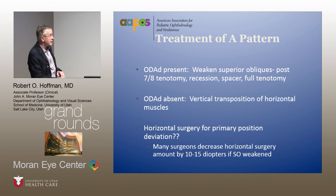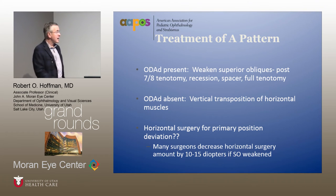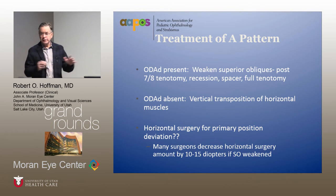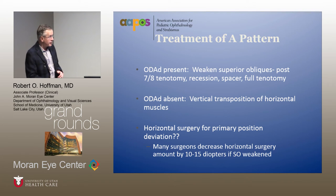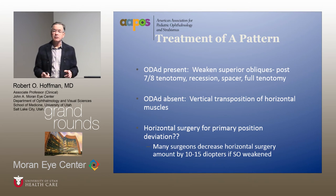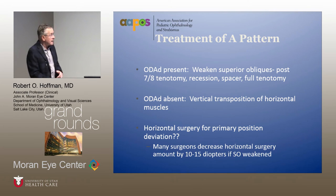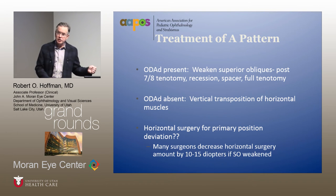If there is no over-depression in adduction, vertical transposition of the horizontal muscles is more appropriate. Regarding horizontal surgery for primary position: most surgeons will decrease the amount of horizontal surgery because you will see less exodeviation if you weaken both superior obliques — remember, it is an abductor with effect mainly in down gaze but also in primary position. Other surgeons will weaken the superior obliques and come back to deal with the horizontal muscles in a second surgery.